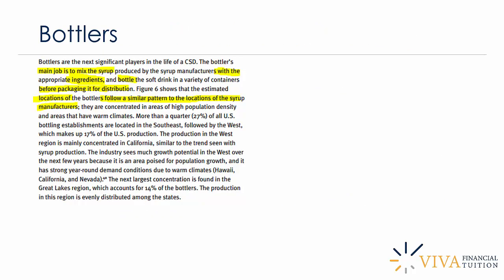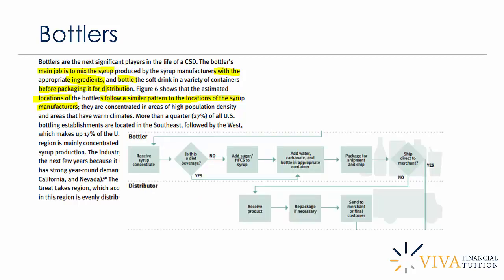Now the issue of bottlers — the other significant players in the life cycle of a carbonated soft drink. Bottlers' main job is to mix the syrup from the syrup manufacturers with the appropriate ingredients and bottle the soft drink in a variety of containers before packaging it for distribution. Locations of bottlers follow a similar pattern to syrup manufacturers, as it is naturally in the interest of bottlers to be within a short distance of syrup manufacturers to cut down on transport costs. The bottlers receive the syrup, then determine whether it is diet or non-diet: if diet, it goes straight to the addition of carbonated waters; if not, added sugars are introduced.